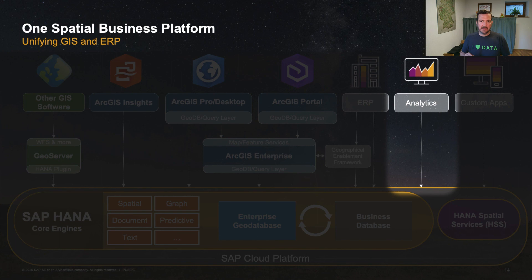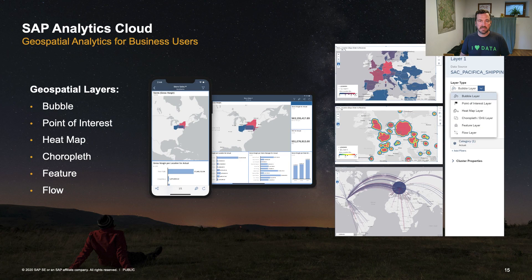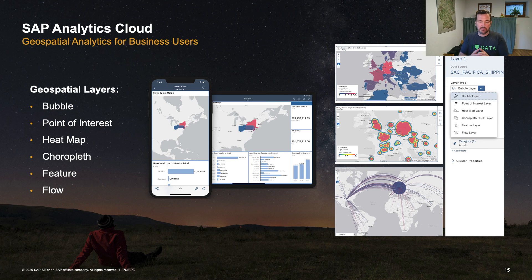Once you have your GIS data and your business data in the SAP HANA data platform, you can use SAP Analytics Cloud to do analytics based on that data. It supports geospatial analytics including bubble layers, point-of-interest layers, heatmaps, choroplasts, feature layers using ESRI data, and flow layers as shown in the lower right corner. The geospatial data can thus be prepared for the business user to make the geospatial dimension better understandable on a dashboard level.